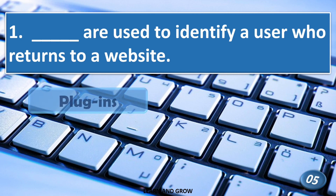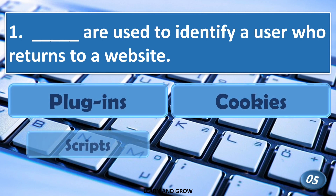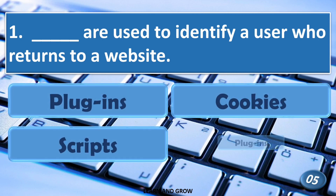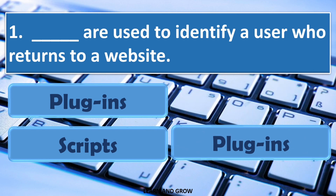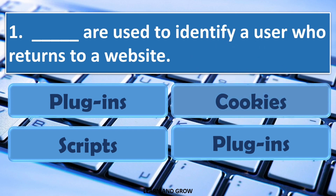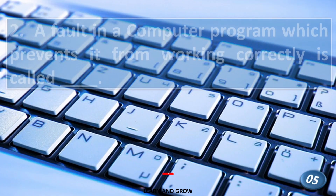The right answer is cookies. Cookies are used to identify a user who returns to a website. A fault in a computer program which prevents it from working correctly is called — what?